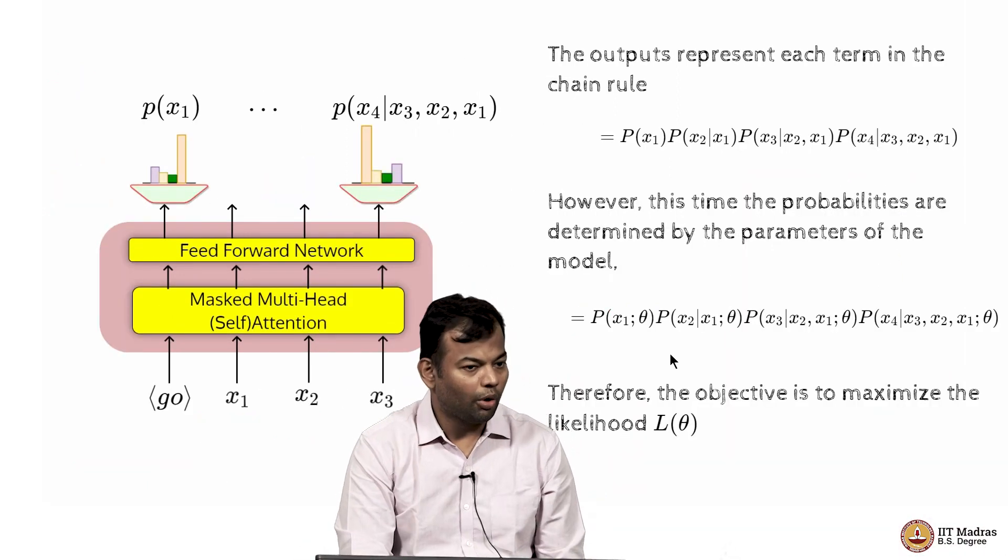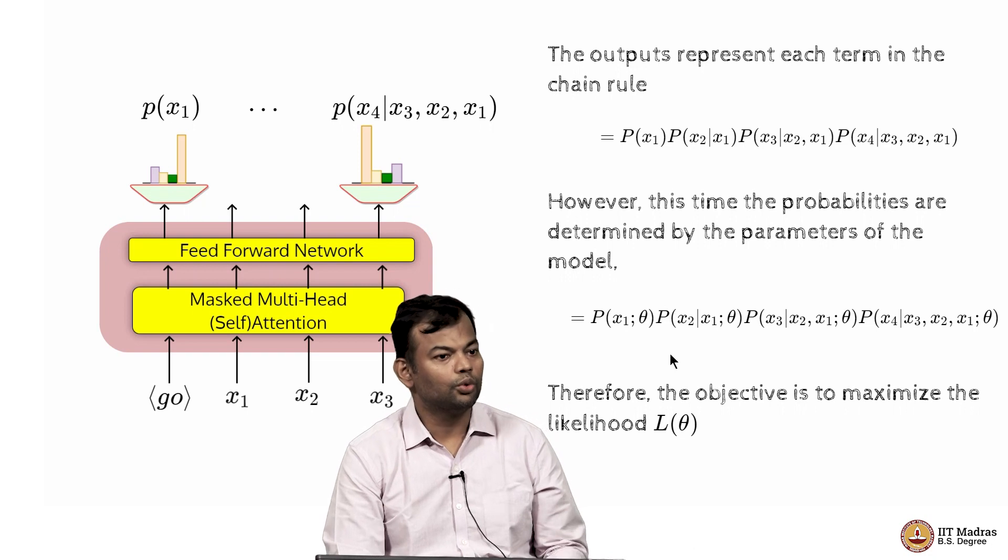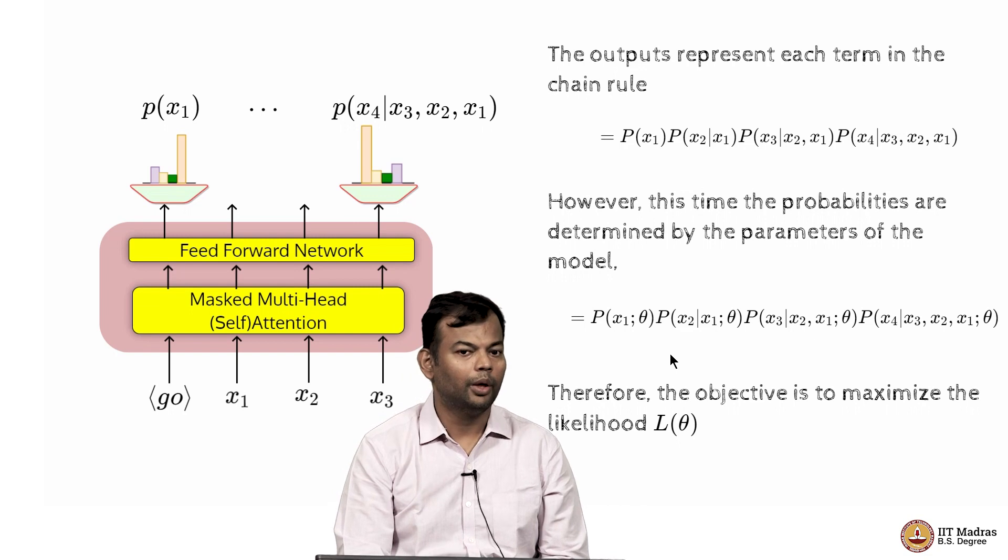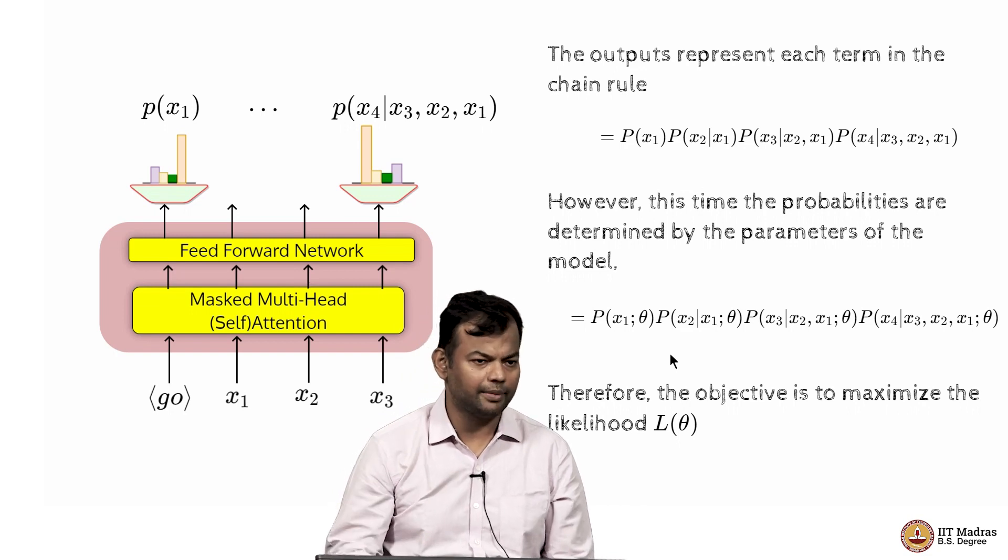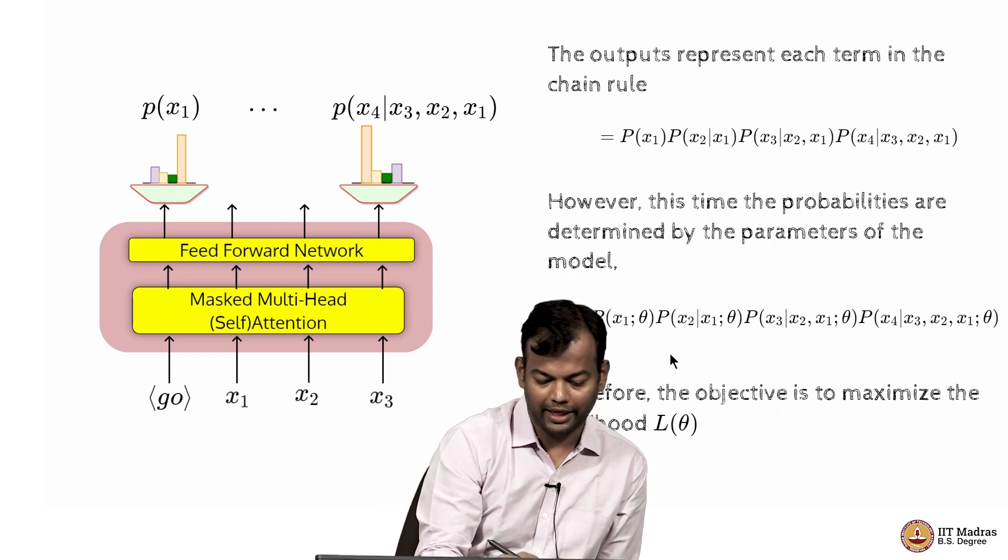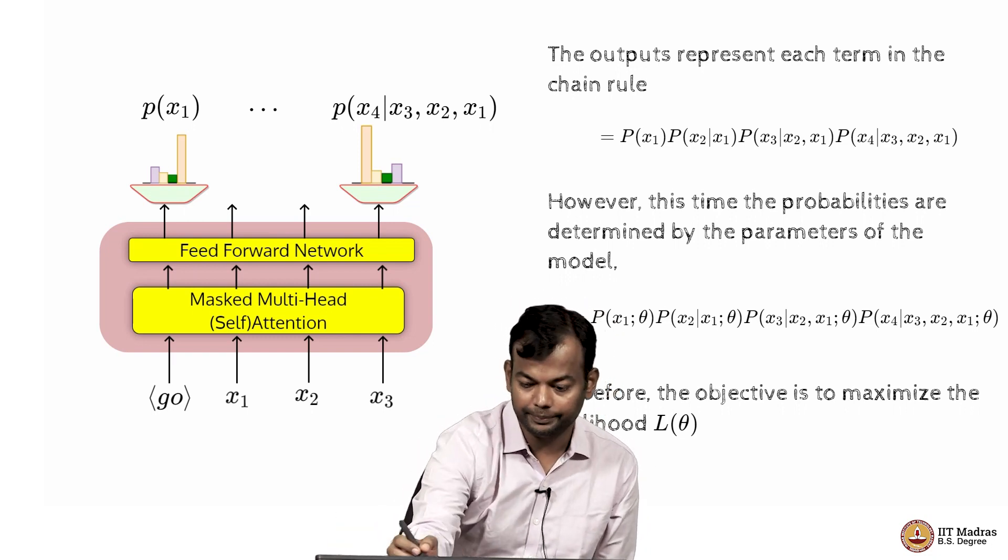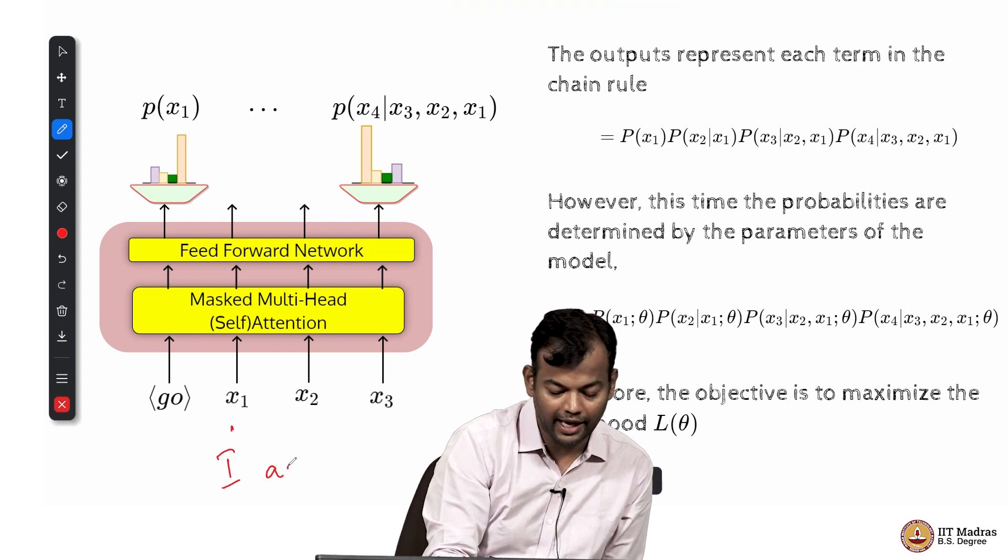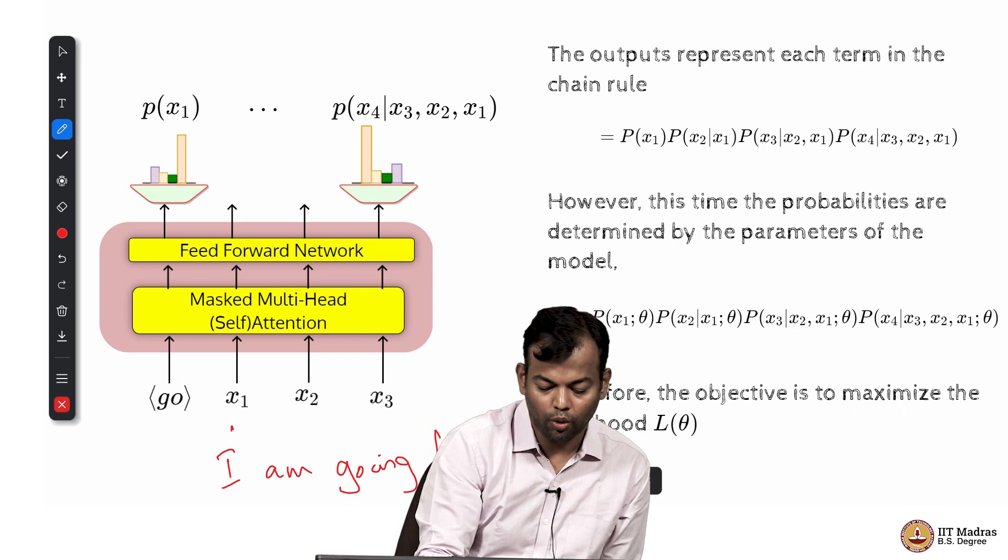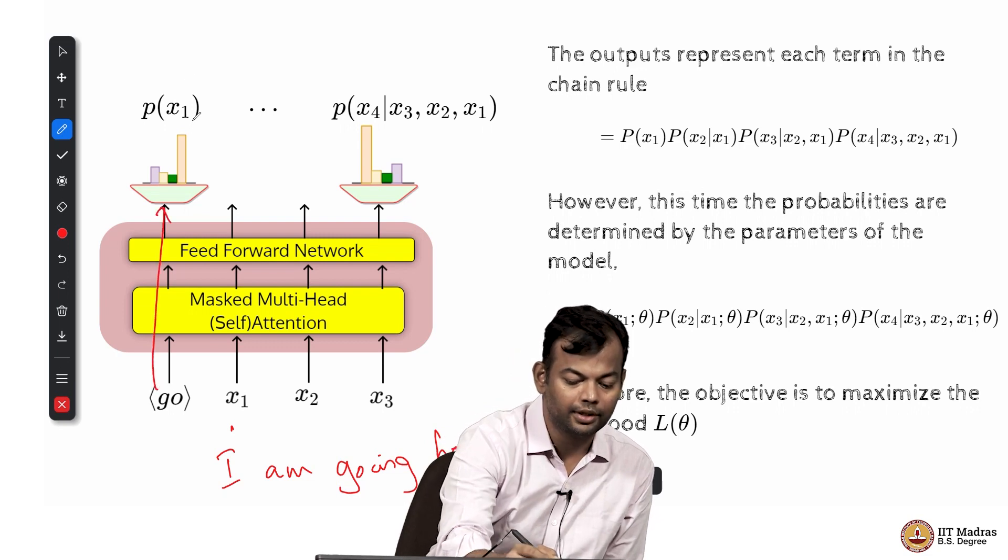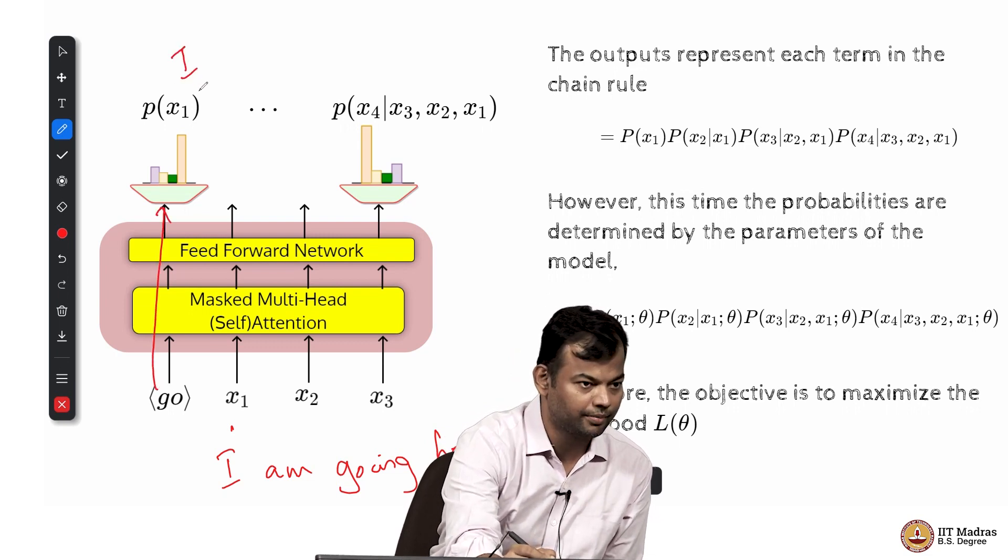Okay. So then during training, our objective should be to maximize or rather maximize the likelihood L theta, where theta are the parameters of the model. And maximizing the likelihood we have already seen. So this is, we want to make sure that during training, if my training sample was, my actual training sample was, I am going home today, if that was my actual sample, then when I pass it this, P of I should be maximized. That is what maximizing the likelihood means. When I take the I and pass it here, the P of AM should be maximized, or rather P of AM, P of the second word equal to AM, given that the first word was I should be maximized. Does that make sense?